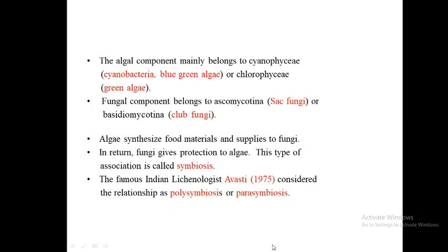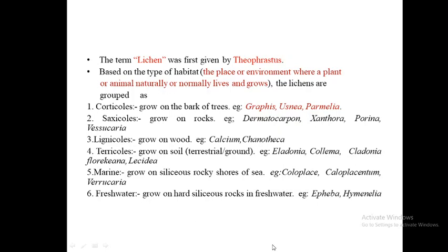The famous Indian lichenologist Awasthi considered the relationship as polysymbiosis or parasymbiosis. Theophrastus first used the term lichen to denote a superficial growth on the bark of trees. The study of lichen morphology began with the work of Erik Acharius, who is regarded as the father of lichenology. Smith considered them as perennial aerial plants of the lowest organisms.